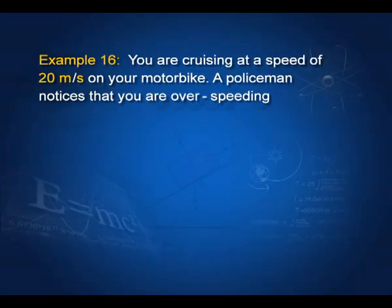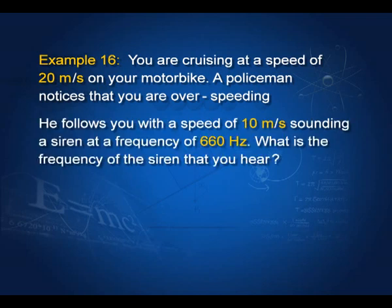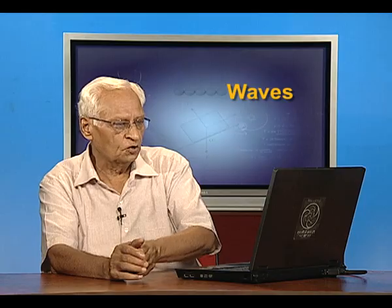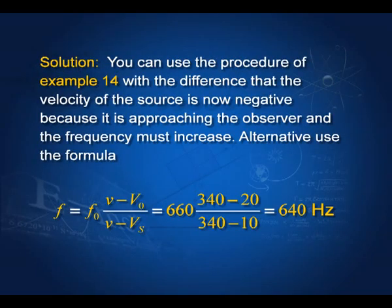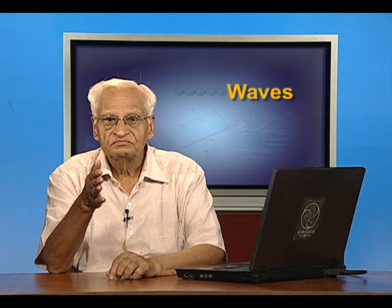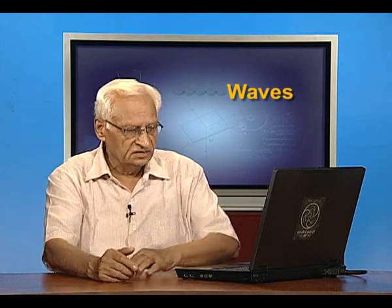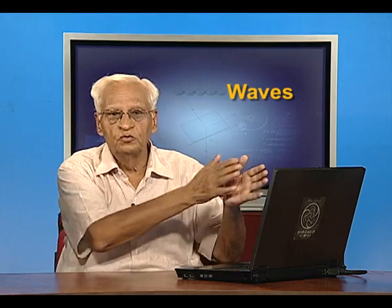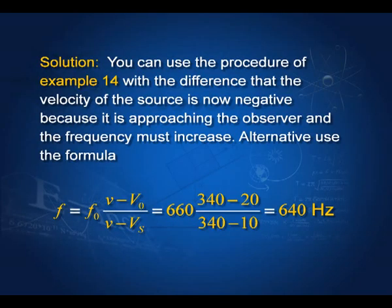You are moving away on a motorbike at 20 m/s; a policeman follows at 10 m/s sounding a siren at 660 Hz. The observer (you) is moving away, so V₀ is negative. The source (policeman) is approaching you, so Vs is also negative. Substituting these values gives f equal to 640 Hz.